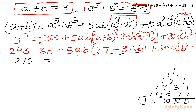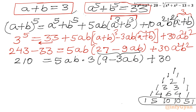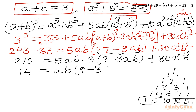Now this equation is divisible by 15 (5 times 3). If I divide through, it becomes 14 = ab(9 − 3ab) + 2a²b².